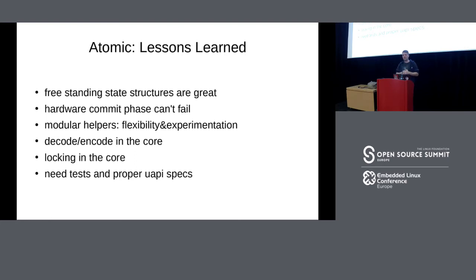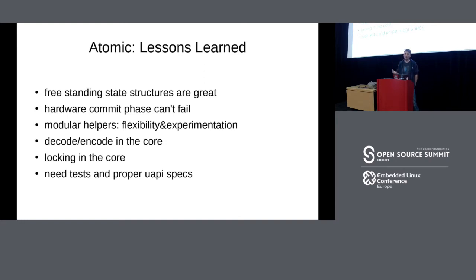What would be not so great: we definitely need new tests. Starting at the beginning of this year, this is now mandatory — we have a user space test suite. We should also have proper user space API specs for all these properties, which we need to do sooner than later, but it's not yet mandatory and it's not quite clear what the best way to do this is.